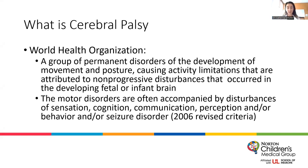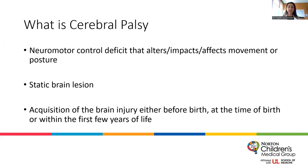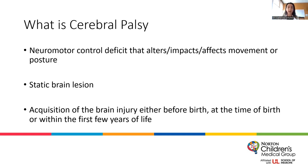What does that actually mean? It means that these children have a neuromotor control deficit that alters and impacts their ability to move or have different postures — not upright standing, but the way that their arms and legs are presented. This is a static brain lesion. It does not change, does not grow, does not get bigger, smaller, or move. This injury happens during gestation, at the time of birth, or within the first few years of life.